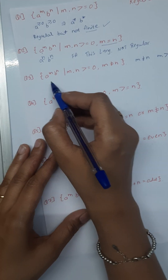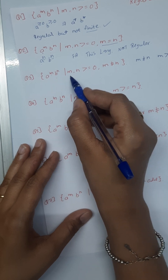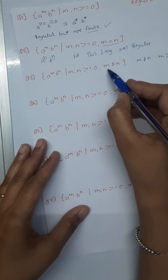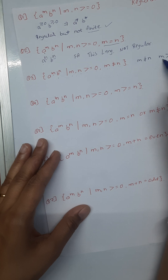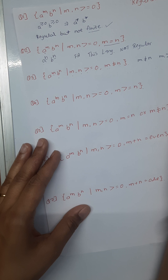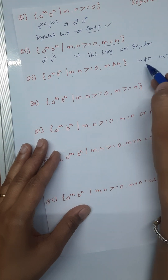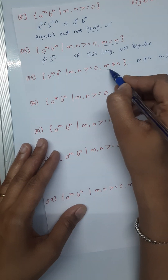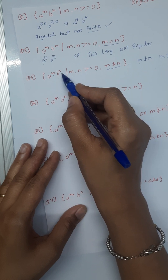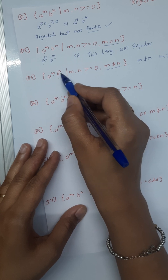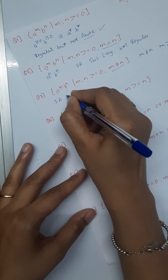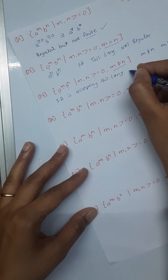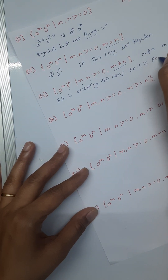Example 3: a raised to m, b raised to n, where m,n ≥ 0 and m is not equal to n. Here m not equal to n means the value of m is either greater than n or less than n — it can be anything. So the values of m and n will always be different. This means the data can be shown and accepted by FA, so this language is regular.